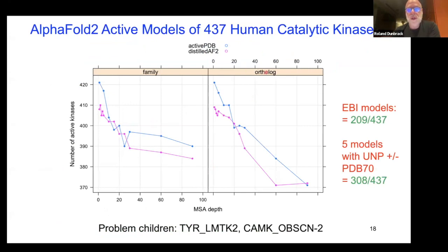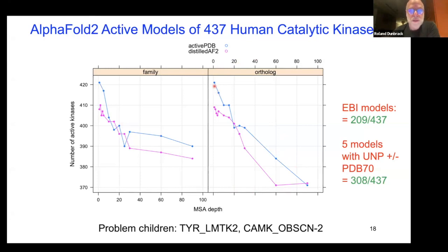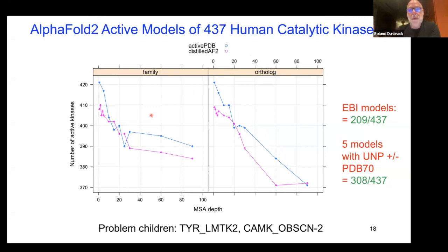As MSA depth decreases from 100 sequences down to 1–2, the number of kinases for which we get at least one active model increases. The EBI AlphaFold database has only 209 active kinases; using 5 models with all of UniProt and PDB70 gives only 308. By combining results across all MSA depths and template sets, we managed to get all 437 kinases to produce an active model — though no single MSA/template combination alone achieves this.